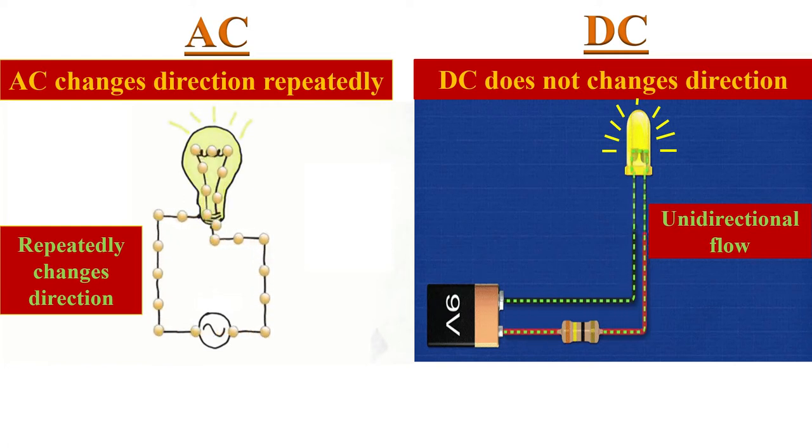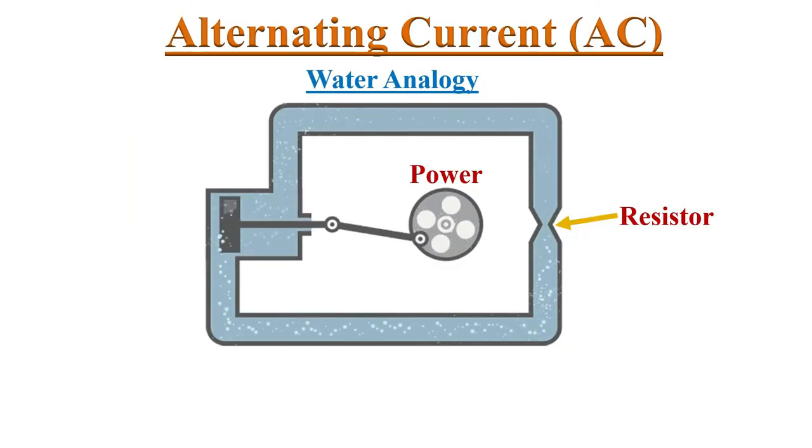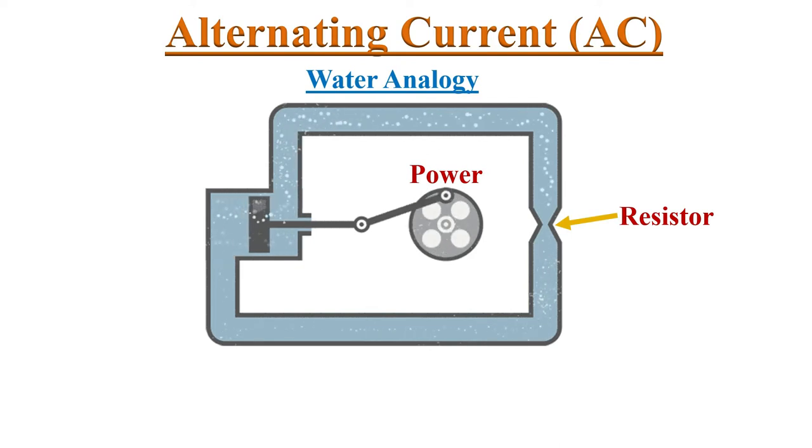Alternating current can be well explained with water analogy. Here, a mechanical crank is connected to a piston, which moves water in the pipes forward and backwards. Just like flow of alternating current in a circuit.